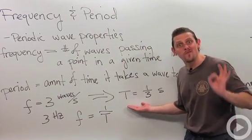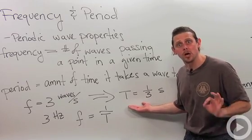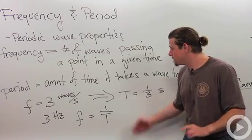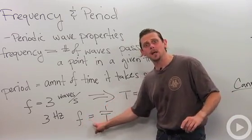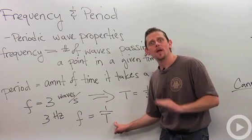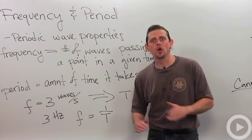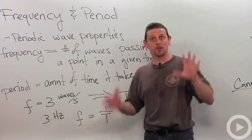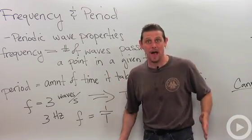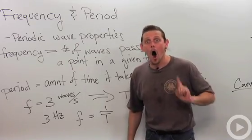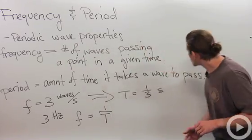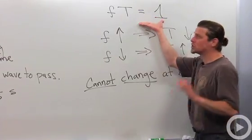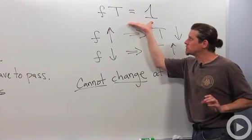So that gives us a very general relationship between frequency and period. Frequency is equal to one over period. That is always true. It follows directly from the definitions of these quantities, and that means I can always write it down and it will never be wrong. Let's look at some properties that are associated with this relationship.